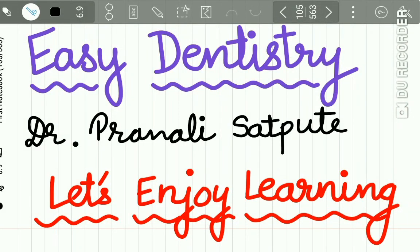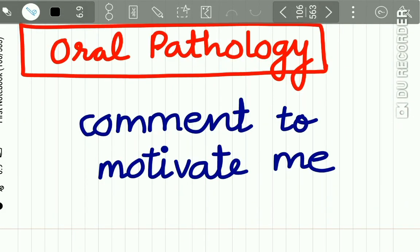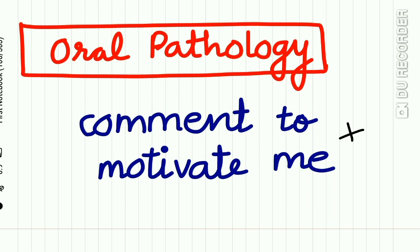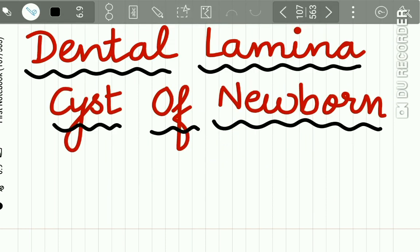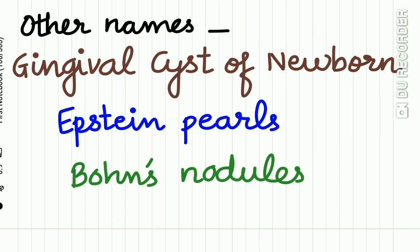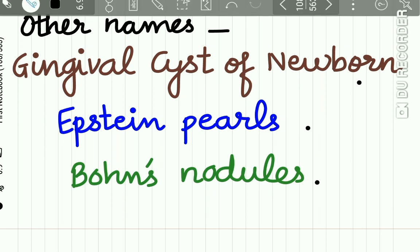Hello everyone and welcome back to Easy Dentistry. We have started uploading lectures on oral pathology — please comment and let me know if you like the lectures. Your positive comments really motivate me to upload more. Today's topic is dental lamina cysts of the newborns. The other names are gingival cysts of newborns, Epstein pearls, and Bohn's nodules.